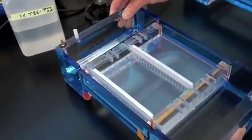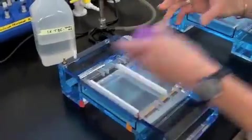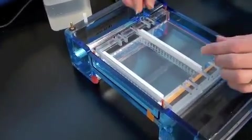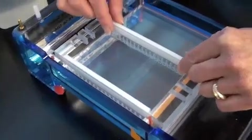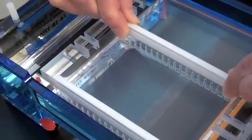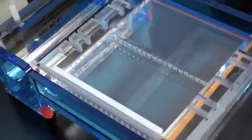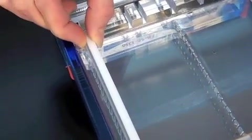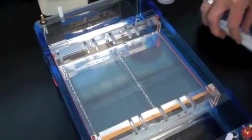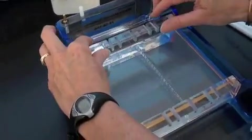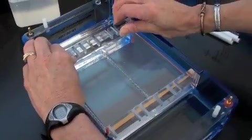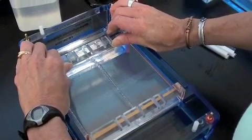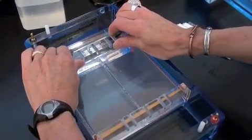But before we can load the gel, we have to make a few changes. First of all, we're going to remove the combs and expose the wells. These are the wells into which we will load our DNA samples. Notice that the well is literally an indentation in the agarose. You will be assigned certain wells for your samples. Next, we have to turn this gel around so that the current applied to the gel box will pass across the gel.